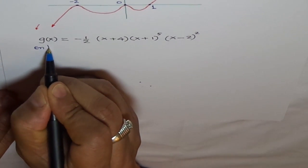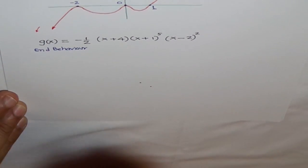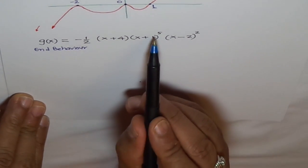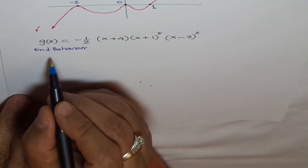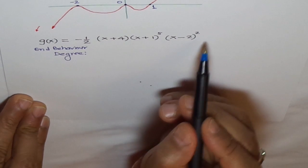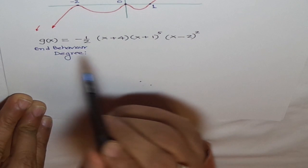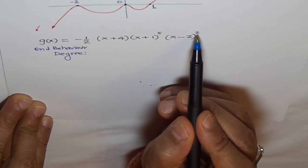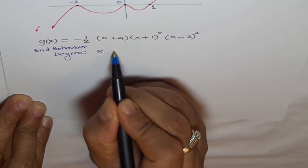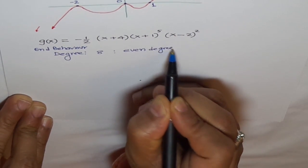Let's look into the end behavior first. How will you get the end behavior? You can get it by checking the degree of your polynomial. What's the degree? They are factors, they get multiplied. When they get multiplied, these exponents get added up. So 2 plus 5 is 7 plus 1 is 8. So degree is 8, meaning even degree polynomial.